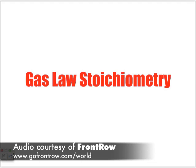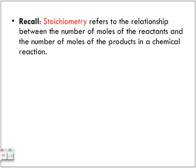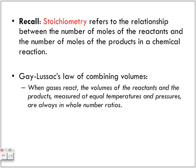Today's lesson is on gas law stoichiometry. We're going to revisit stoichiometry but now keeping in mind the gas laws learned at the beginning of this atmospheric chemistry unit. Stoichiometry refers to the relationship between the number of moles of the reactants and the number of moles of the products in a chemical reaction, so it's important to know how to balance equations and put together formulas.